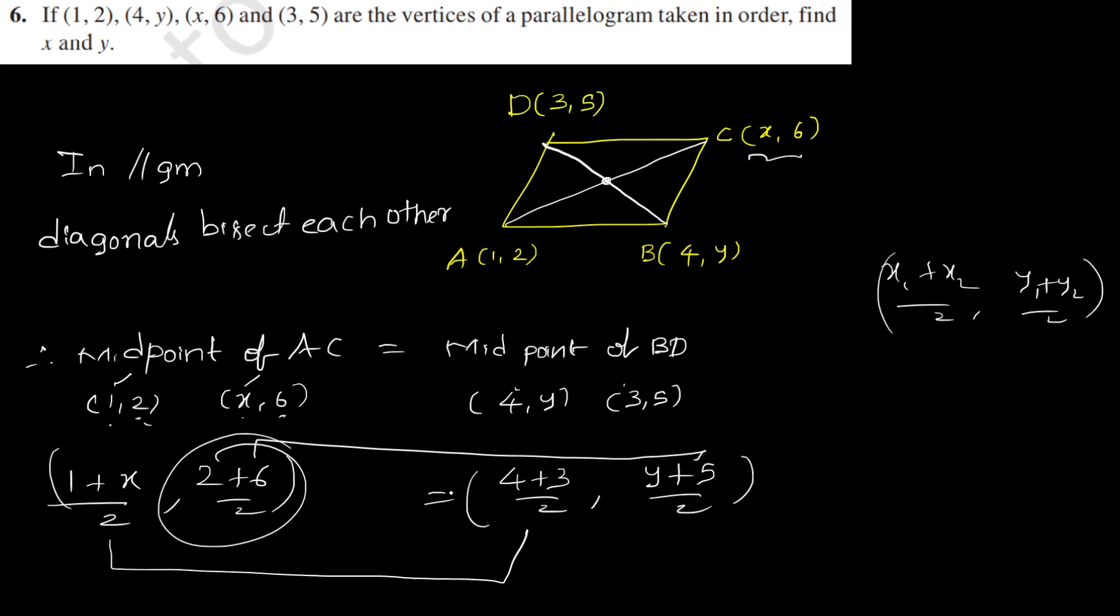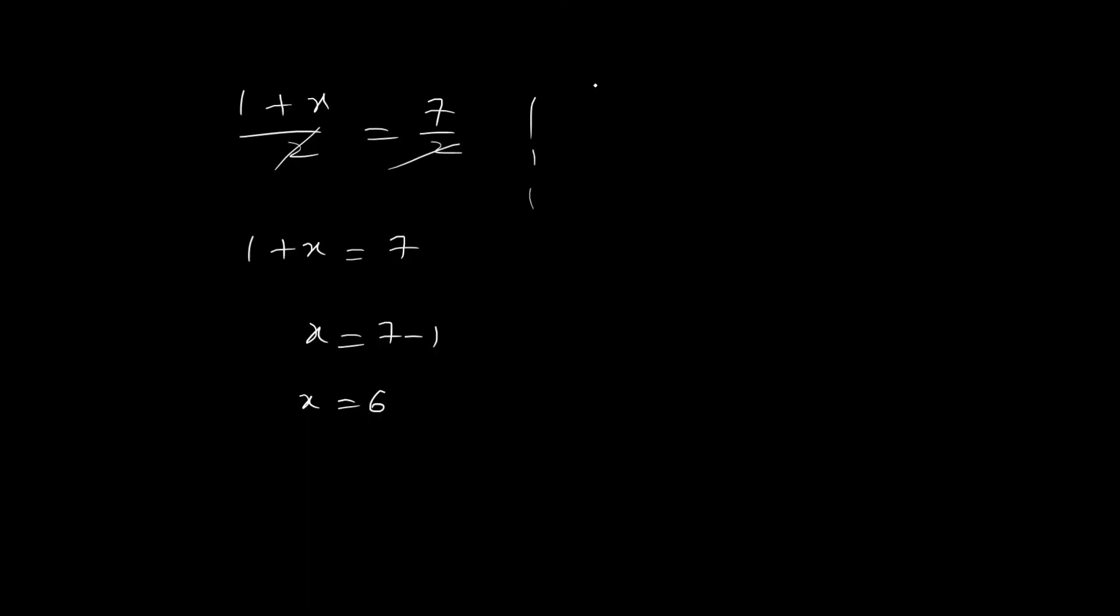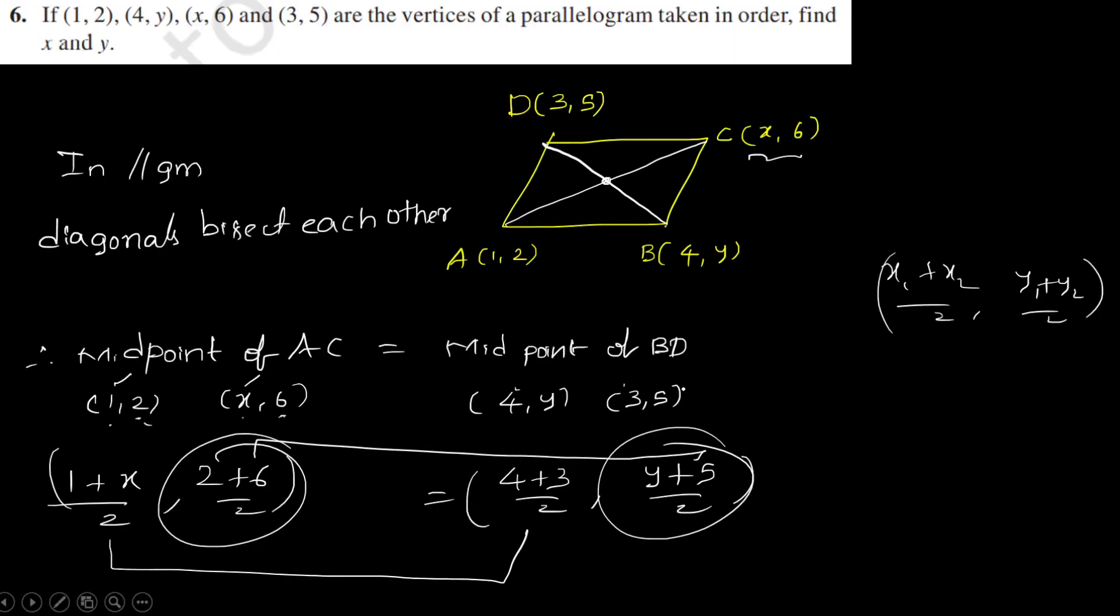Similarly, (2+6)/2 should equal (y+5)/2. 8/2 = (y+5)/2. Cancel the 2: y+5 = 8. y = 8-5, that is equal to 3. That's it.